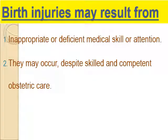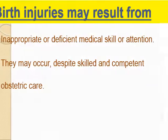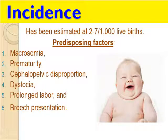Birth injury could result from a medical situation, whether it is deficient or inappropriate medication or medical interference. But it could also occur despite good skill and good competence of obstetric care, so there is always a risk. It represents two to seven per thousand of live births. Predisposing cases include macrosomic babies and premature babies, cephalopelvic disproportion with a large baby and narrow pelvis, and also dystocia, prolonged labor, and malpresentation.